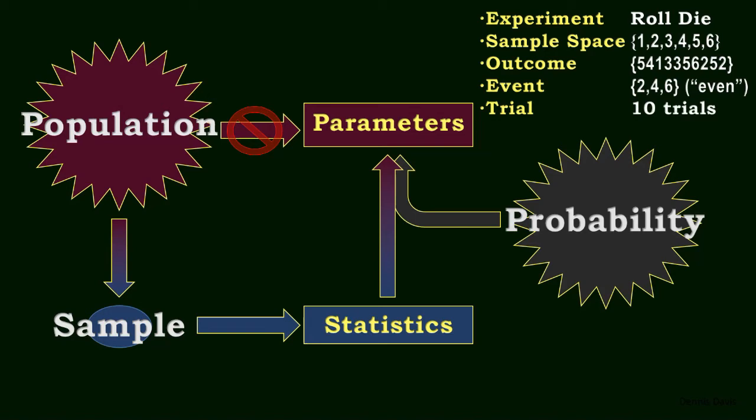The ten outcomes, at least from the experiments I ran, are 5, 4, 1, 3, 3, 5, 6, 2, 5, 2. The event we are interested in is a set of rolling two, four, or six, the even numbers. And the number of trials is ten. So our event occurred four times in ten trials.